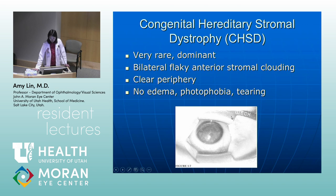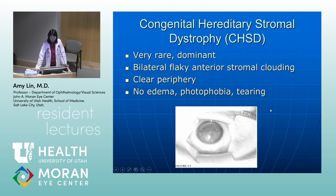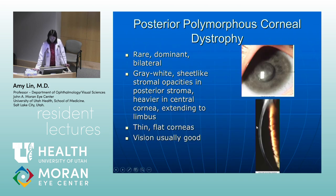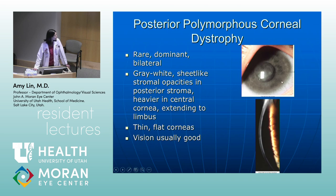Congenital hereditary stromal dystrophy is very rare. It is a dominant condition with bilateral flaky anterior stromal clouding with a clear periphery — there's a clear rim at the edge. There's no edema, photophobia, or tearing. Posterior polymorphous corneal dystrophy is seen a little more often but is still quite rare. It's also autosomal dominant and always bilateral. You'll see gray-white sheet-like stromal opacities posteriorly in the posterior stroma, more so in the central cornea but extending out to the limbus.